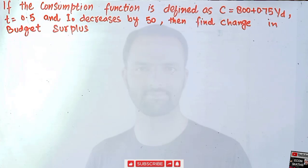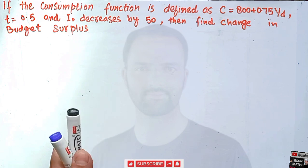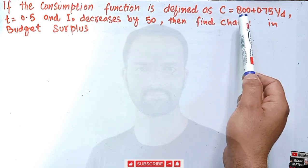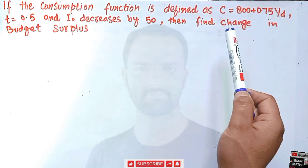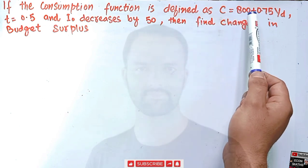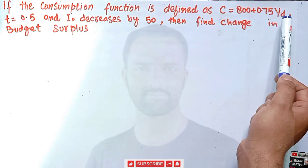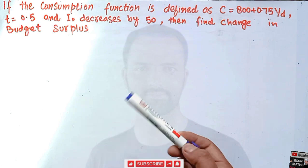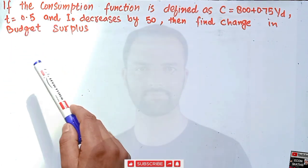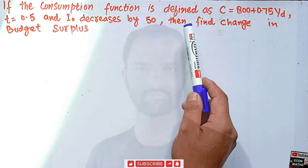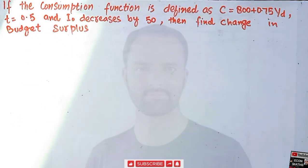Hi, this is Halal. In this video on the mathematical economics series, we will try to solve a problem asked by a friend, Kritika Tyagi, on YouTube. The question is: if the consumption function is defined as C = 800 + 0.75·Y_d, where the autonomous investment I₀ decreases by 50, then we have to find the change in the budget surplus.